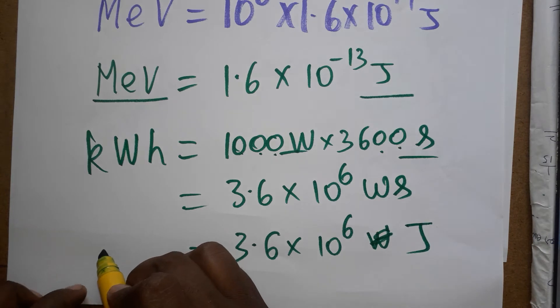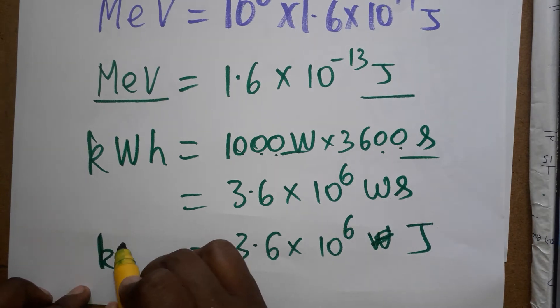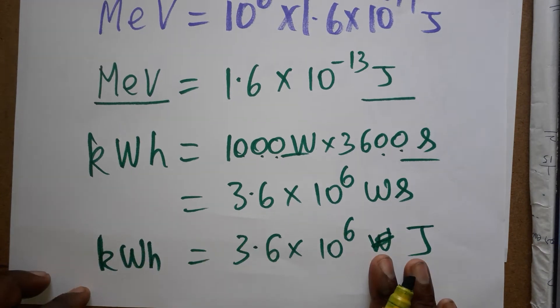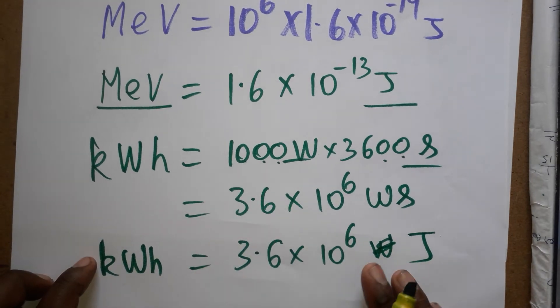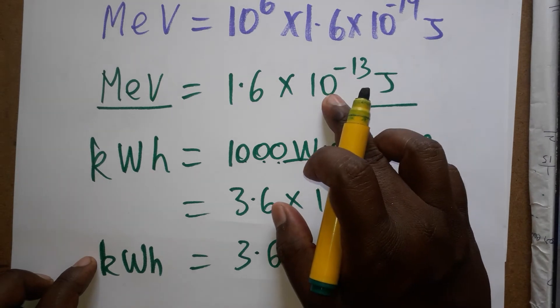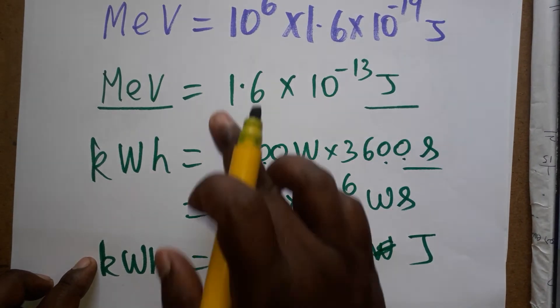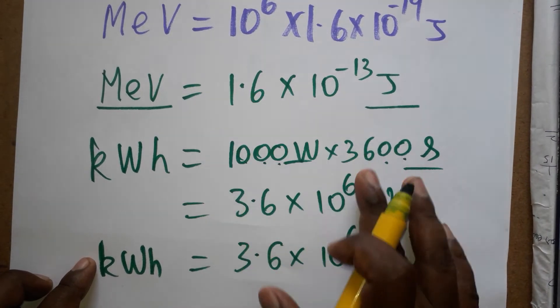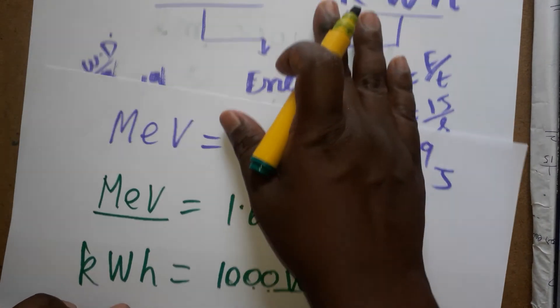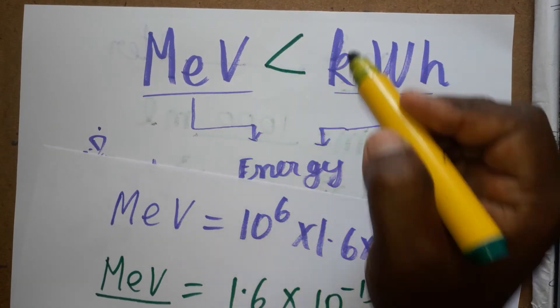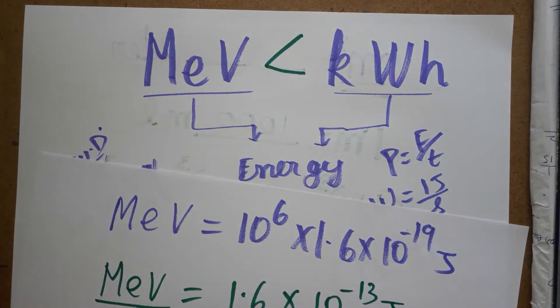Now we have MeV in the form of joules (1.6 × 10⁻¹³ J) and kWh in the form of joules (3.6 × 10⁶ J). Since one is a positive power and the other is a negative power, kWh is greater than MeV.